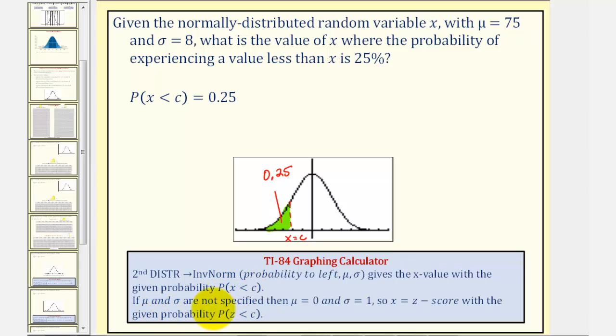If the mean is 0 and the standard deviation is 1, meaning we have the standard normal distribution, then this gives the z-score such that the probability of z is less than c.